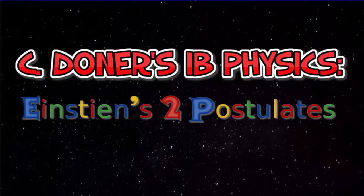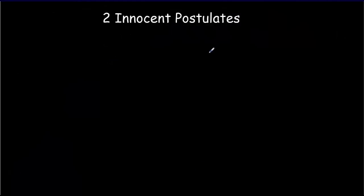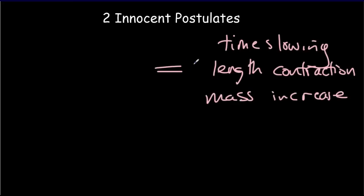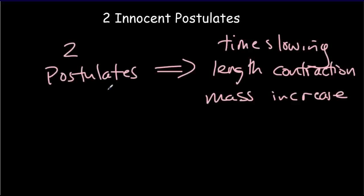Today we're going to look at Einstein's two postulates of the special theory of relativity. There are three effects we were talking about in the last video: time slowing, length contraction, and mass increase. They're really the consequence of two very innocent-seeming postulates. In fact, one postulate is kind of a consequence of the first, so we could just have one very innocent-seeming postulate.